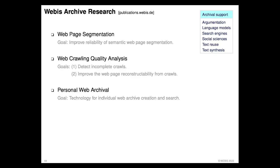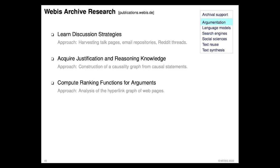On the analysis and application side, we have been looking into argumentation research. Natural language is one of the primary tools to argue, and we want to look at discussion strategies — how people discuss with each other online or offline, what are ways to win an argument, to persuade or convince other people. For this we harvest talk pages, email repositories, and in this case specifically the Reddit site, which we also try to harvest more of from the web archive.